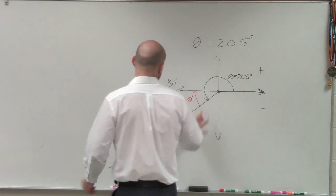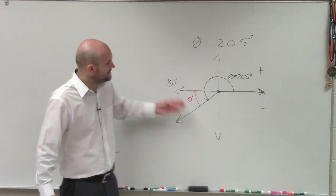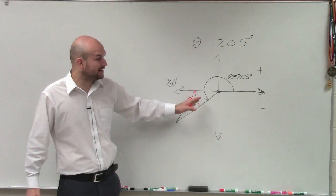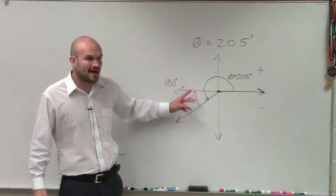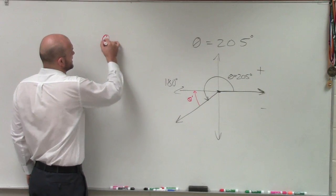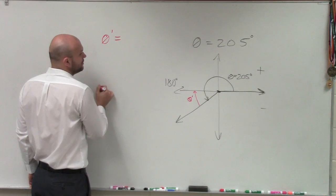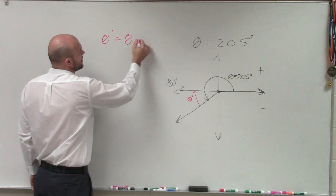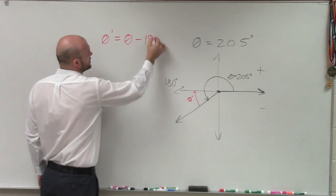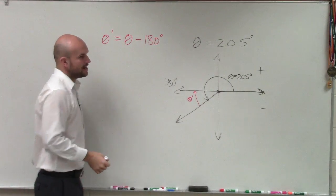So we have this in the third quadrant. So what I need to do is I have this big angle, 180 degrees, but I just want to figure out what the red is. That's the reference angle. So I'll take theta prime is going to equal theta minus 180 degrees.